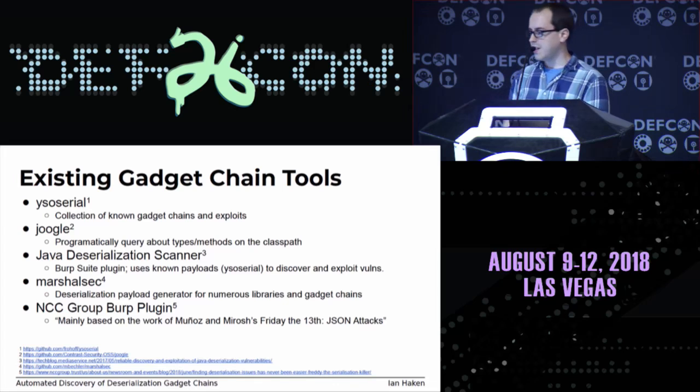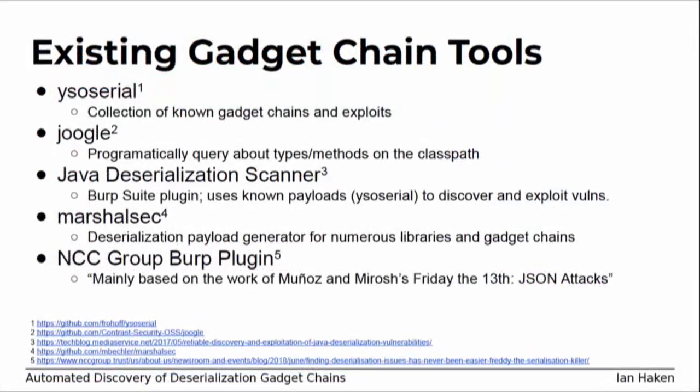There are a bunch of other existing tools in this space. Joogle is good for programmatically querying metadata on your class path. The Java Deserialization Scanner is a Burp Suite plugin that mostly uses payloads from YSO Serial to detect known gadget chains. The NCC Grouper plugin was released earlier this year — another dynamic scanner mainly based on payloads from Munoz and Maroche's Black Hat work, more focused on JSON deserializers. But all these tools don't immediately answer: is there something unique to my application that makes it vulnerable?